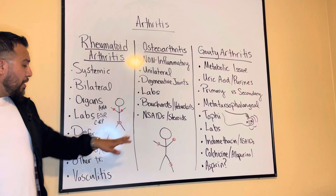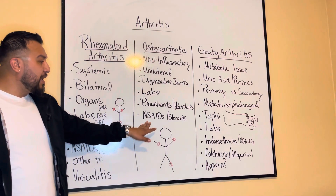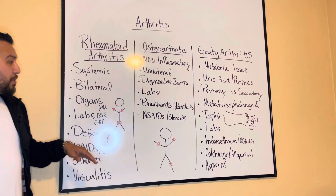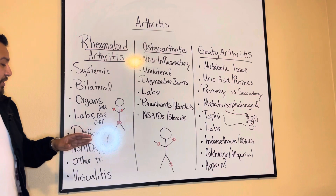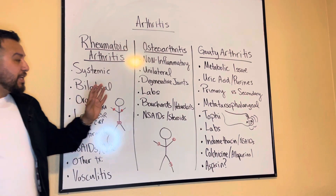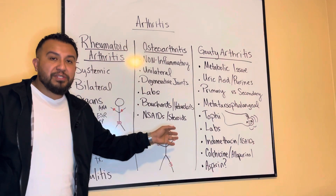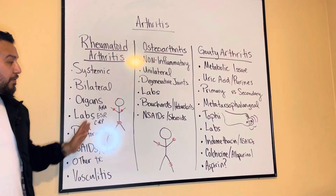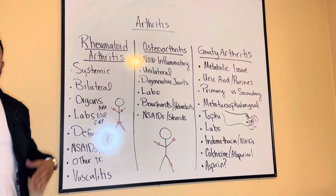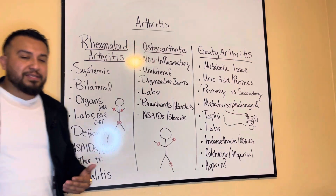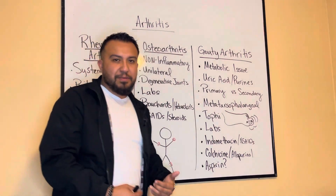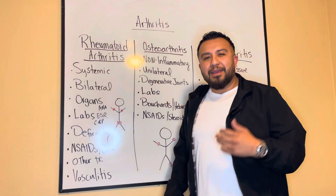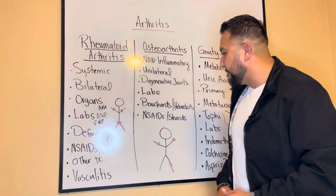Medications include NSAIDs and steroids — medications that decrease inflammation. Keep in mind that anytime we're giving these drugs for either of these patients, we have to assess the GI system because they may potentiate gastric bleeding.